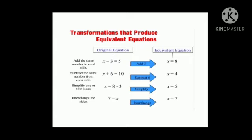Now, to balance the equation, we will subtract the same number, that is 6, on both sides. That is, x plus 6 minus 6 and 10 minus 6. We are left with the answer x is equal to 4.